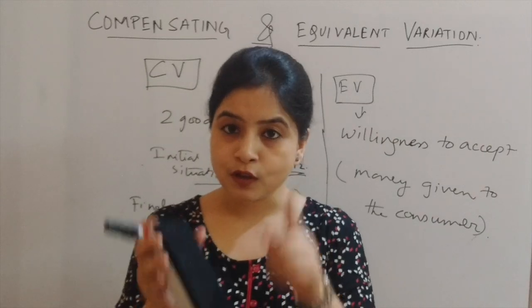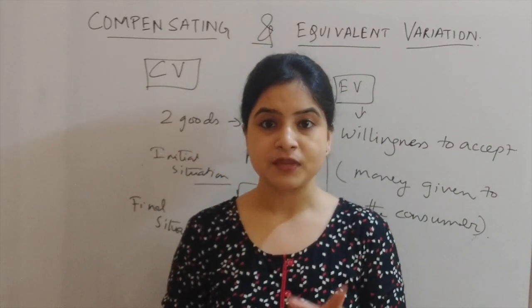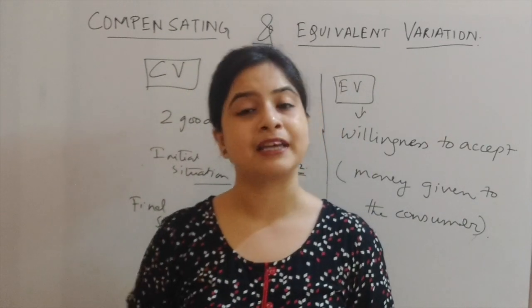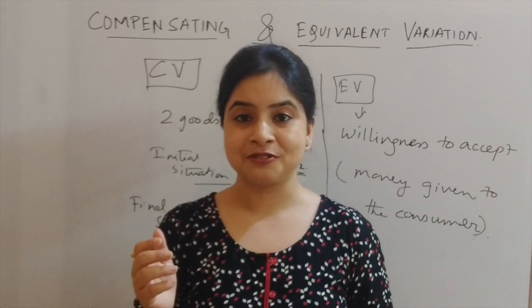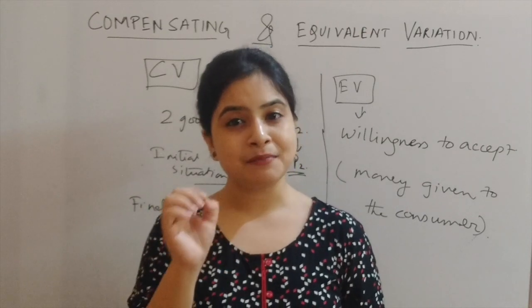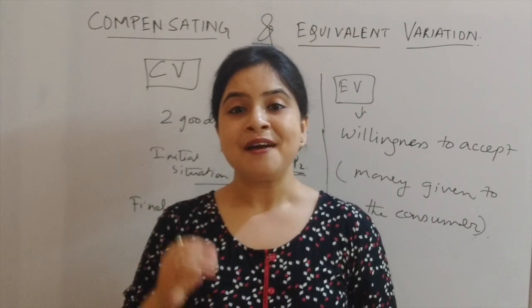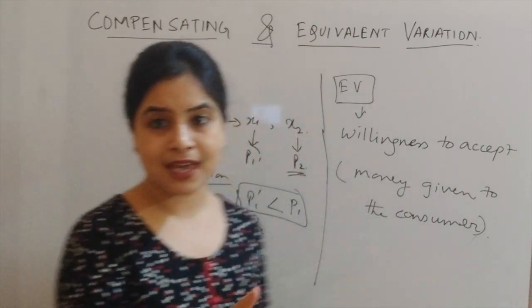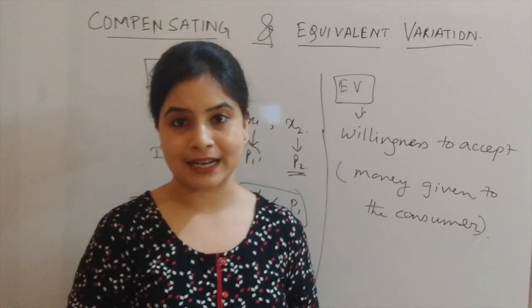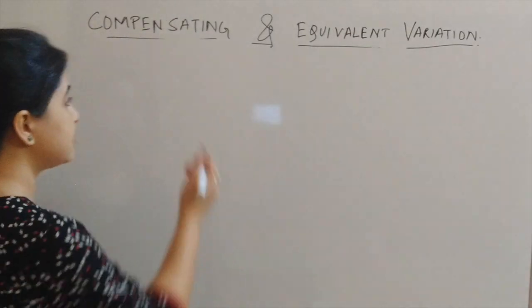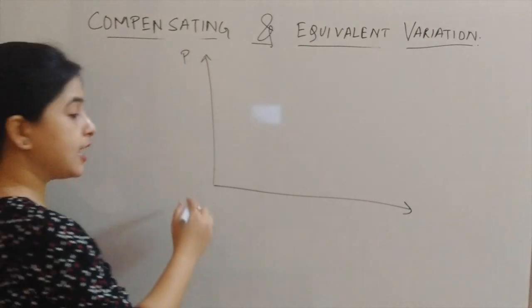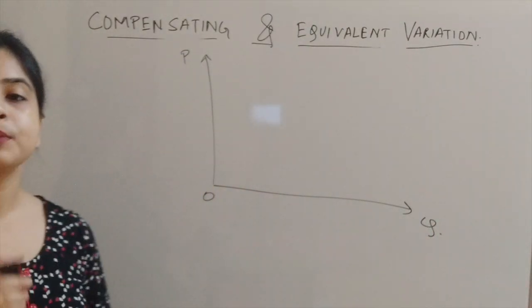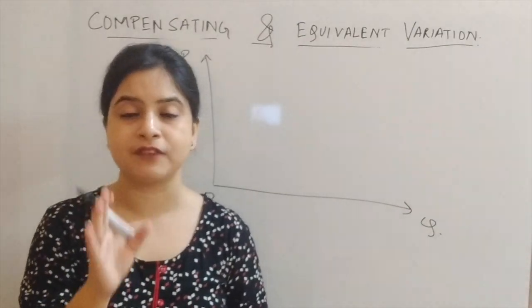I hope you have understood the theory very clearly. If not, please don't hesitate to let us know by commenting below. For those who have understood, kudos to you — and for those with a little doubt, we are going to discuss the same thing diagrammatically as well. So let's move to the diagrammatic representation. For the diagram, the vertical axis represents price and the horizontal axis represents quantity.